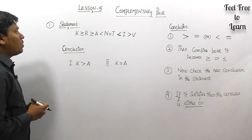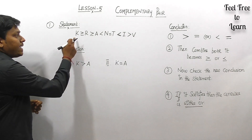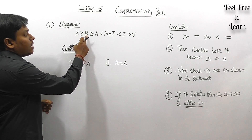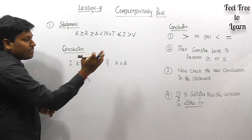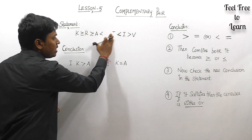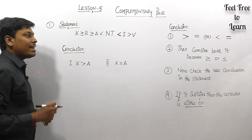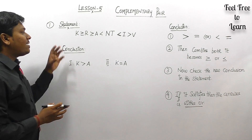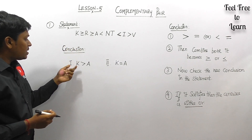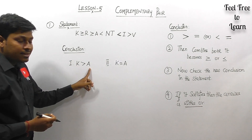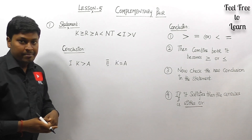Question number one: the statement given is K ≥ R, R ≥ A, and N = T, with N < T and < I, > B. The conclusions given are: conclusion one — K > A, and conclusion two — K = A.